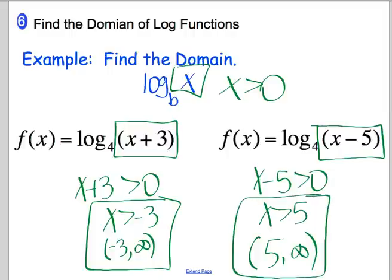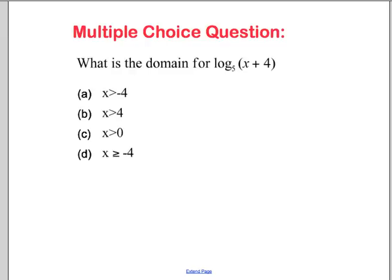For domain, the possible x values must make the argument of the log positive — the thing you're taking the log of has to be positive. Here's your multiple choice question for today: pause your video and find the domain of this log. This will be the multiple choice question you'll put in today's Google Form.